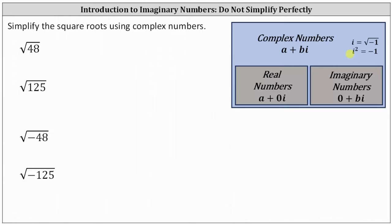For the first example, we want to simplify the square root of 48. 48 is not a perfect square, however, this will still simplify as long as 48 has a perfect square factor. If we recognize that 48 is equal to 16 times 3, and 16 is a perfect square, we can simplify this very quickly. If we don't recognize this, we can always look at the prime factorization of 48.